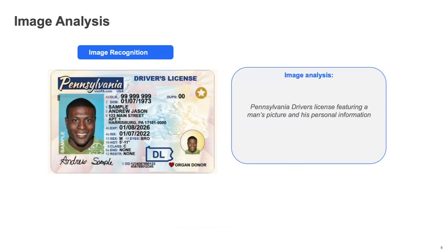From an image perspective, instead of just saying it's a driver's license, you will know this is a Pennsylvania driver's license — it features a man's picture as well as his personal information. So this is well beyond typical OCR where you just extract numbers. Rather, it understands the color, the context, the presence, and the count of things within an image. This can be used to detect things like a passport or a check that might be sitting in S3.